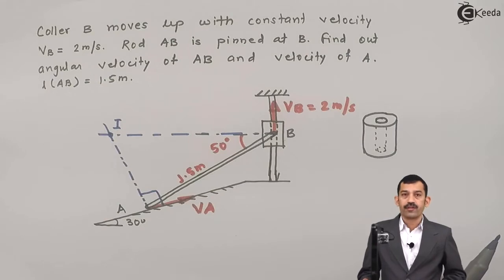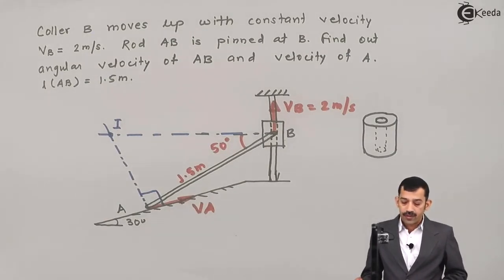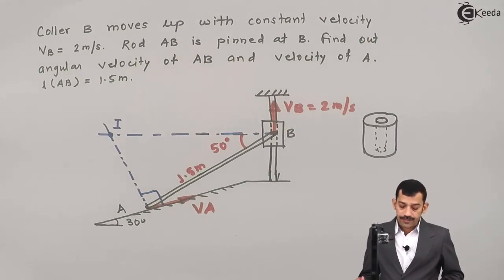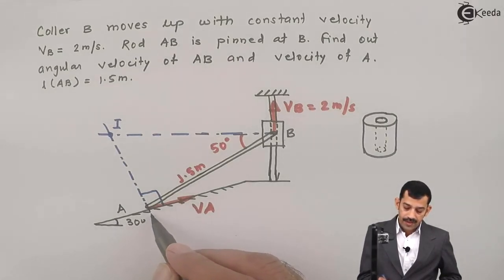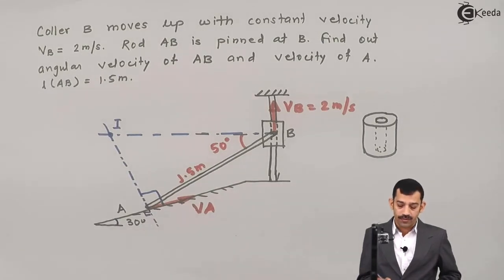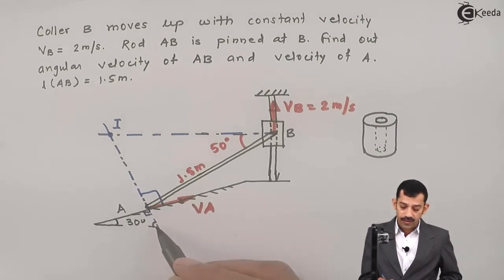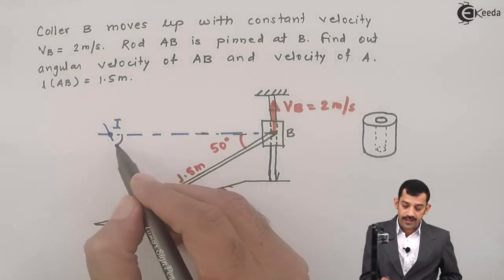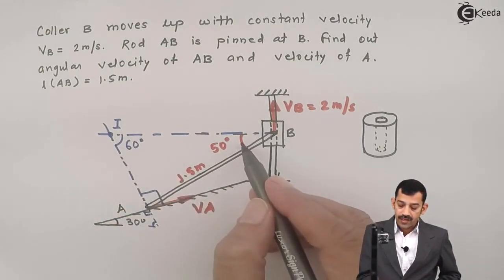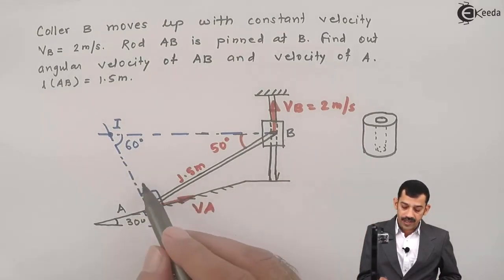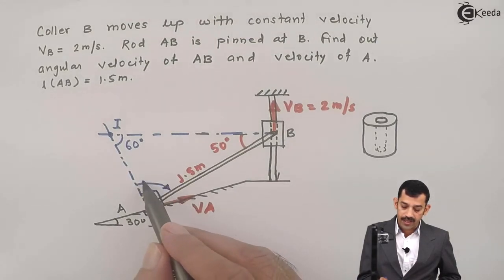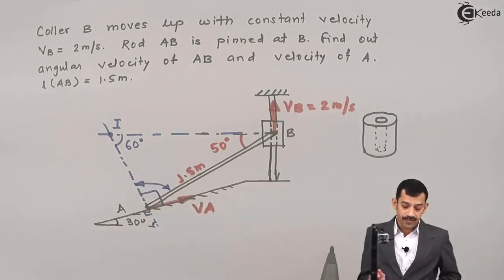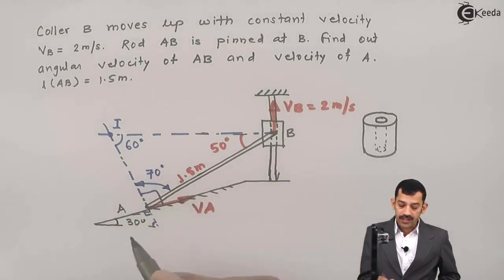Now to find IA and IB, we need to determine the angles in triangle IAB. Since the plane is inclined at 30 degrees, the perpendicular to VA makes an inclination of 60 degrees with the horizontal. So the angle at that location is 60 degrees. The angle at the inclined-plane side is 50 degrees. Therefore, the third angle in triangle IAB is 180 minus 60 minus 50, which equals 70 degrees.